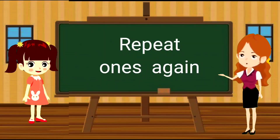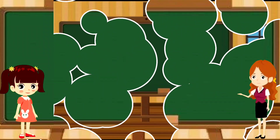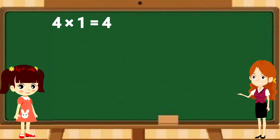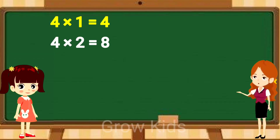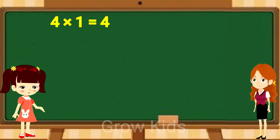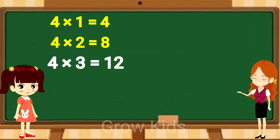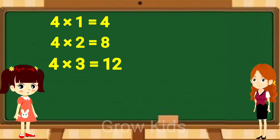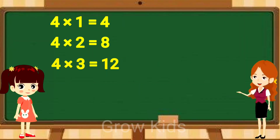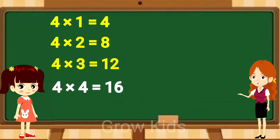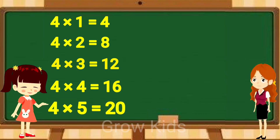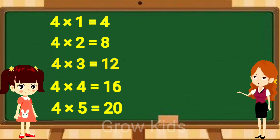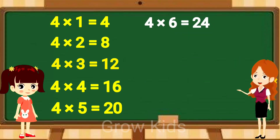Repeat once again. Four ones are four. Four twos are eight. Four threes are twelve. Four fours are sixteen. Four fives are twenty. Four sixes are twenty-four.